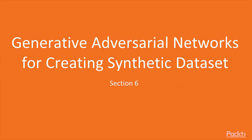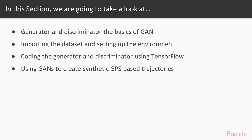We move on to Section 6, which is Generative Adversarial Networks for Creating Synthetic Datasets. We'll be covering the Generator and Discriminator — the basics of GANs. Next, we'll download and set up the Microsoft Research Asia Geolife Project Dataset. Then we will code the Generator and Discriminator Networks using TensorFlow, and finally we'll be training GANs to create Synthetic GPS Trajectories.